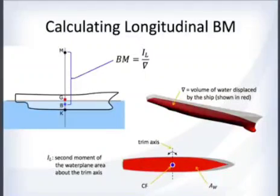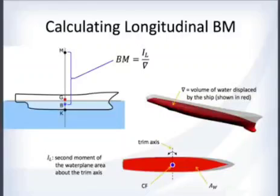As you can see from the illustration, there is a lot more area far away from the trim axis, which means the longitudinal moment of inertia is a much larger number than the transverse moment of inertia.